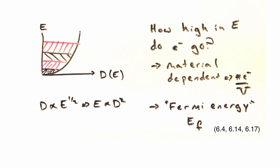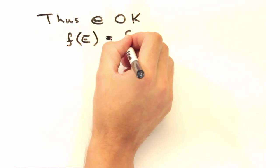But Eric, this is all at 0 kelvin. Obviously that's not the temperature we do experiments at. No, and that's reflected in the Fermi-Dirac distribution.